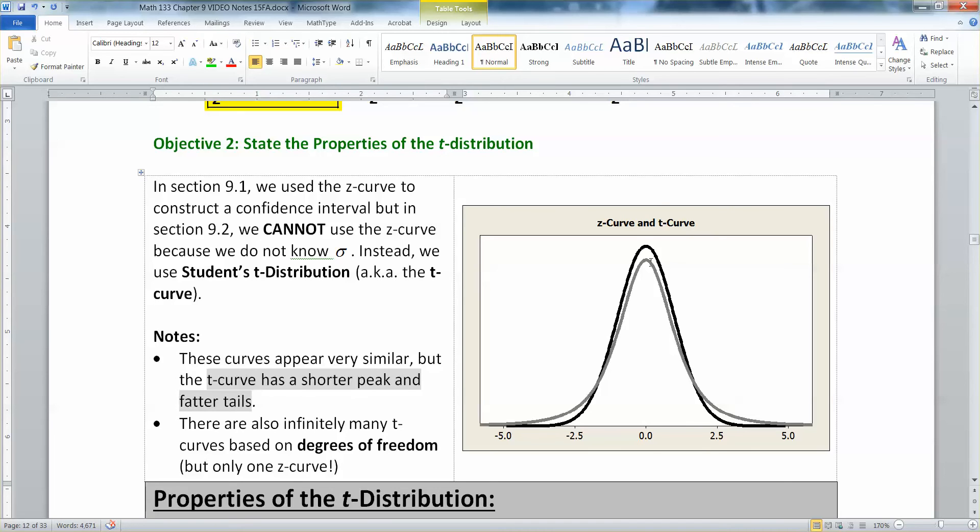How do they compare? I have them drawn for you right here. The Z curve is the black one, and the T curve is the gray one. You can see that the black curve is taller, has a taller peak, and it's a little bit narrower with smaller tails. That's because it has smaller spread than the T curve.